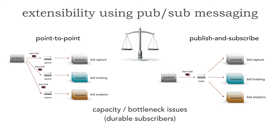The second trade-off is capacity and bottleneck issues, especially with durable subscribers. A regular subscriber — if they go down and a message goes to the topic — that message just disappears, so when that subscriber comes back online, they don't see prior messages. However, if they need to gather everything, such as for tracking, analytics, or even capture, they need to be durable subscribers. The problem is that if durable subscribers go offline for an extended period of time, those messages accumulate within the broker, which can present bottleneck as well as capacity issues.